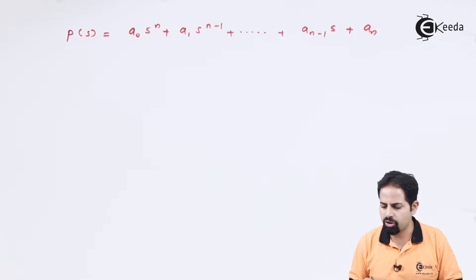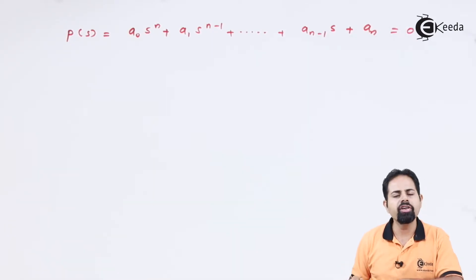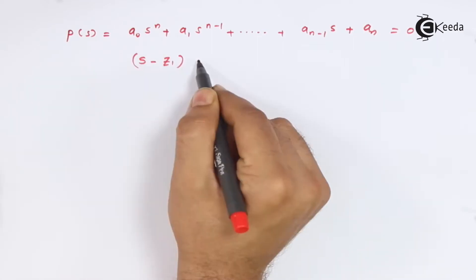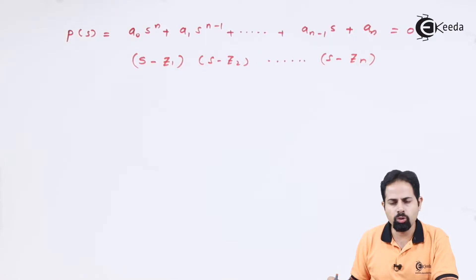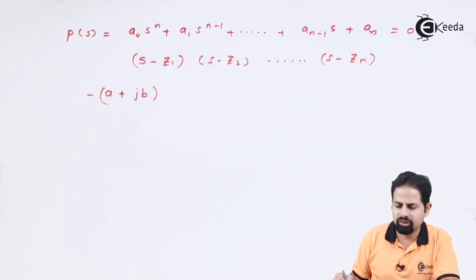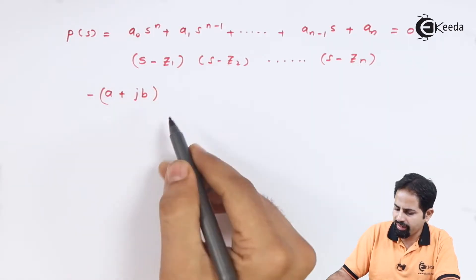Now we can always equate this to zero. And when we equate to zero, we can write it with factors. There will be N roots. Suppose one of the root is with minus sign, of course. So this is suppose one of the root. So how we will write it?